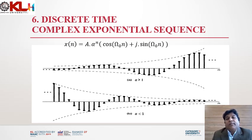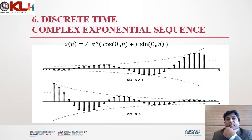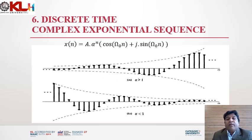Now we are going to discuss the sixth topic, which is discrete time complex exponential sequence, given by a·α^n · [cos(ω₀n) + j·sin(ω₀n)]. Here n is the discrete time variable and α is the exponential factor which multiplies the sinusoidal signals. In figure (a), when α > 1, we observe a growing sinusoid. In figure (b), when α < 1, we observe a decaying sinusoid.